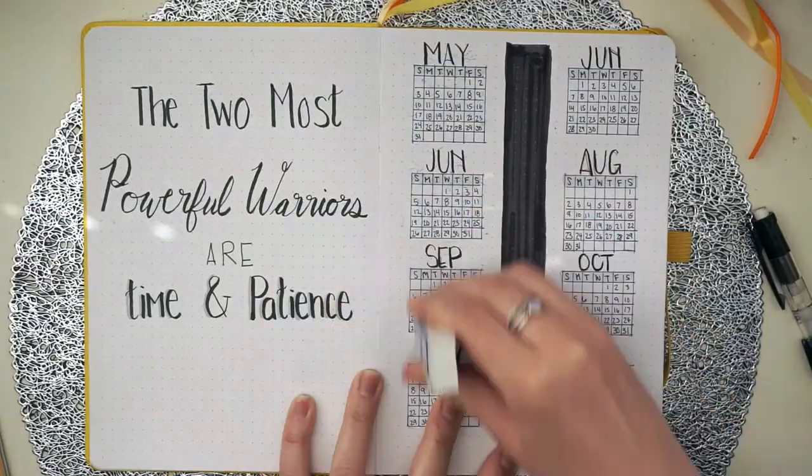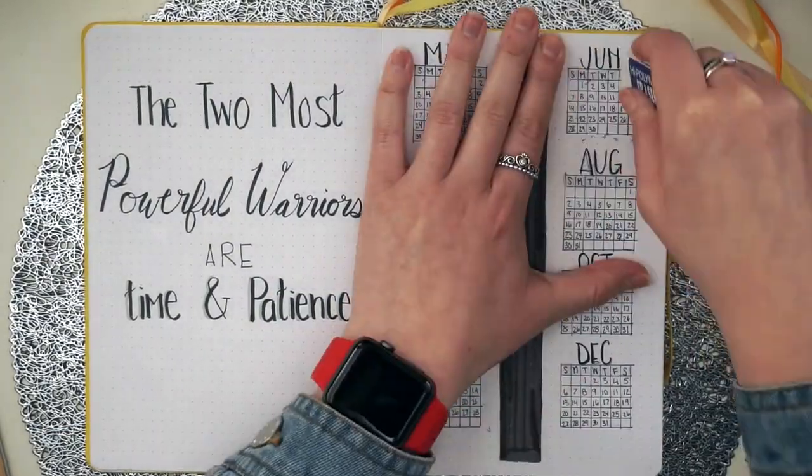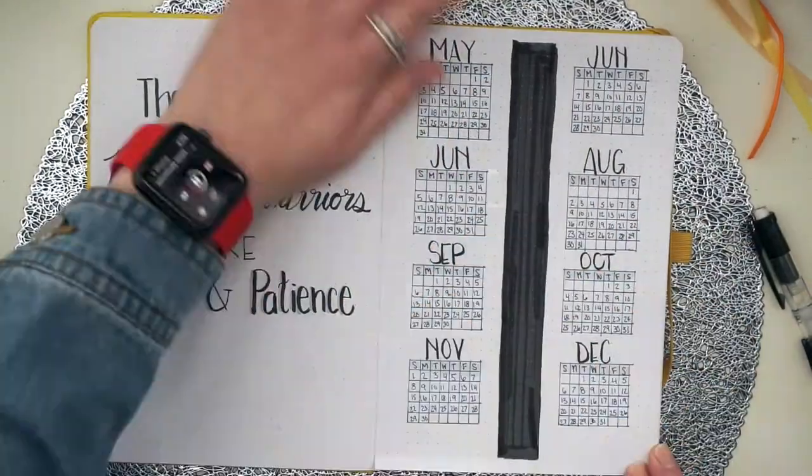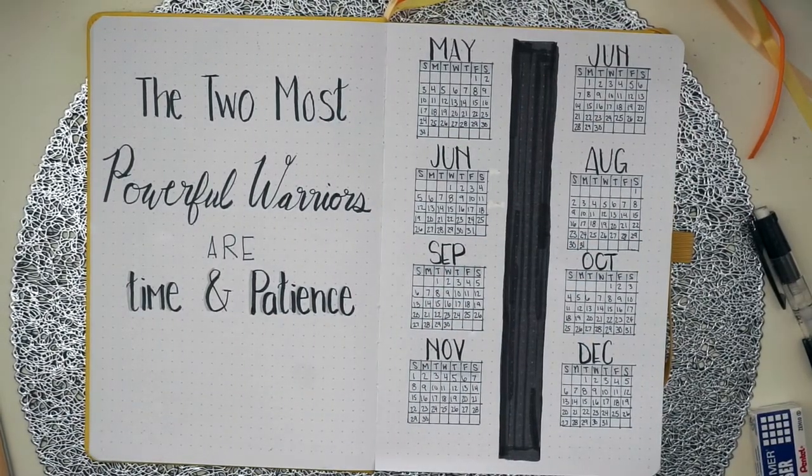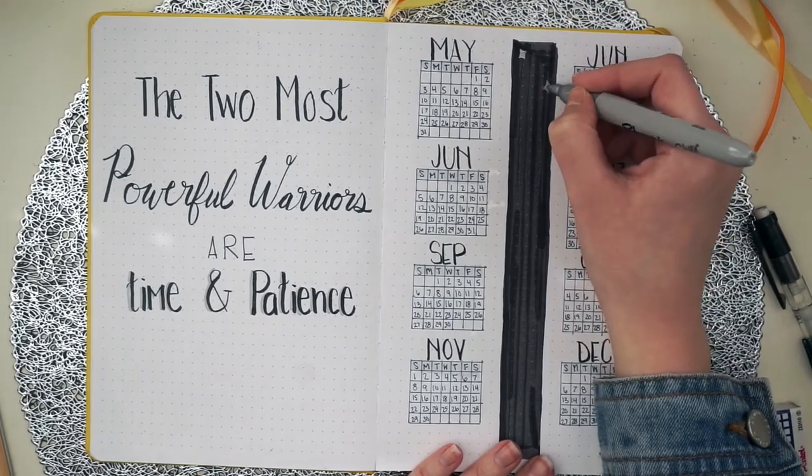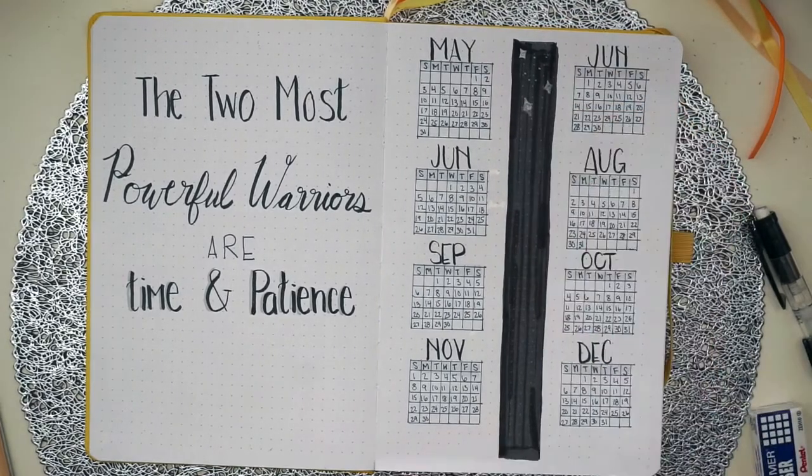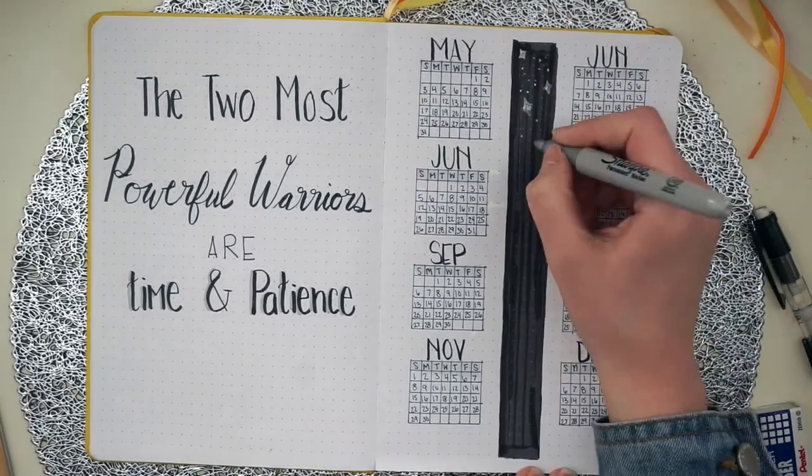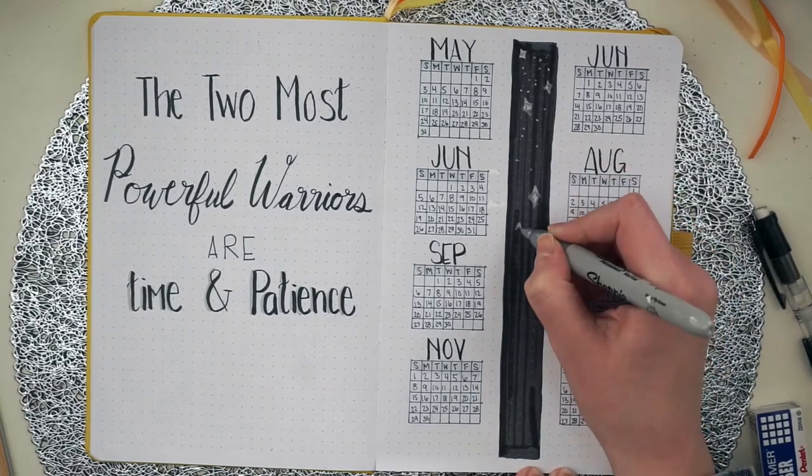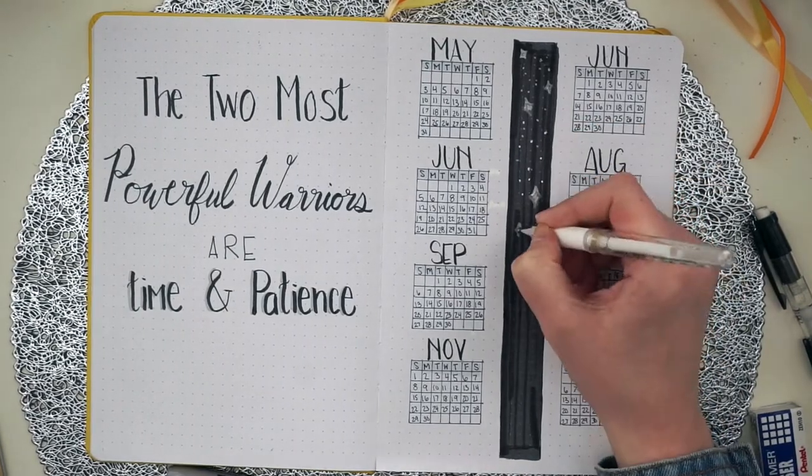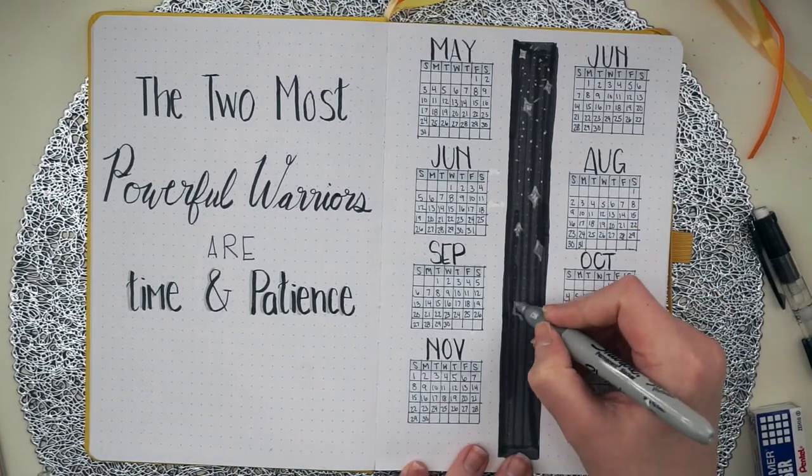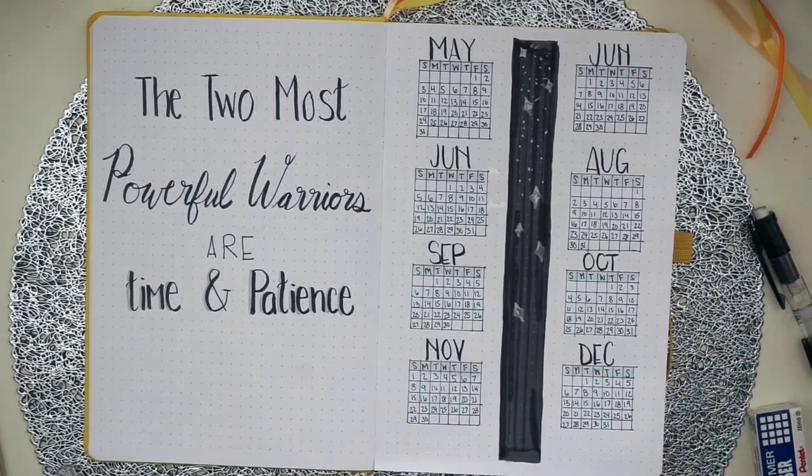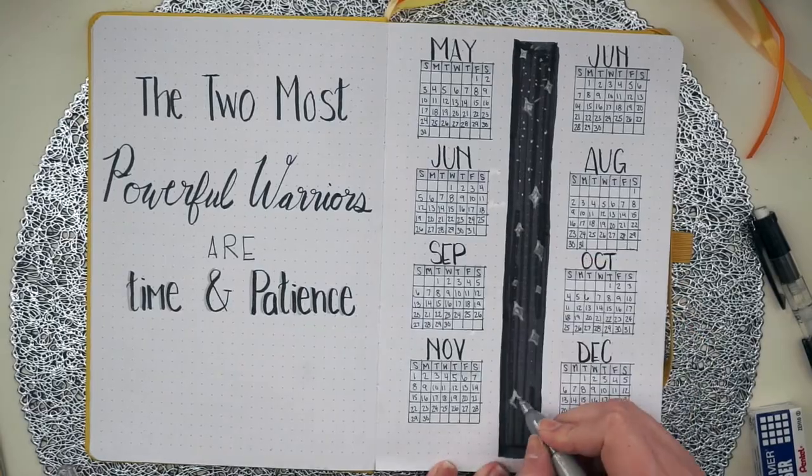Now I'm erasing all the stuff from the calendar page and my future log just to get all those pencil marks out of the way and we are going to go back into detailing that black strip. To add some detail I'm taking my silver sharpie and my white pen, my white Uni-ball pen, and adding some stars and sparkle marks and eventually I add some gold in there but not until the very end.